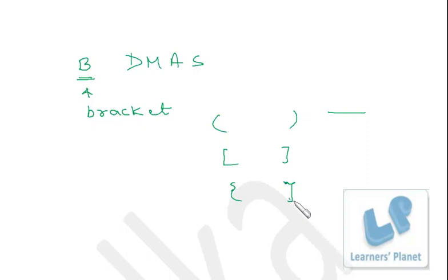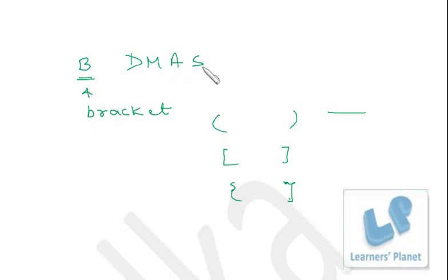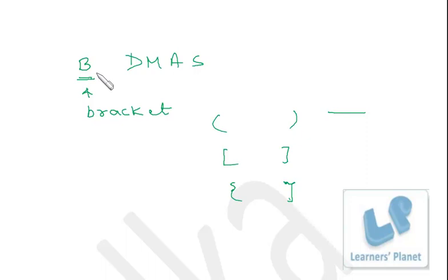We have four types of brackets: line bracket, small bracket, square bracket, and curly bracket. So now we have five operations: Bracket, Division, Multiplication, Addition, and Subtraction — BDMAS. We perform the bracket first, then division, multiplication, addition, and subtraction. So before you go for division, you need to solve the bracket first. Let's practice some problems that include brackets.